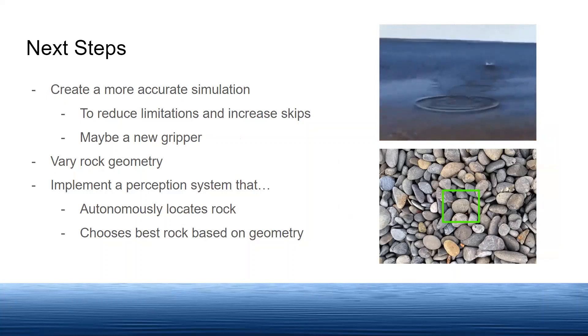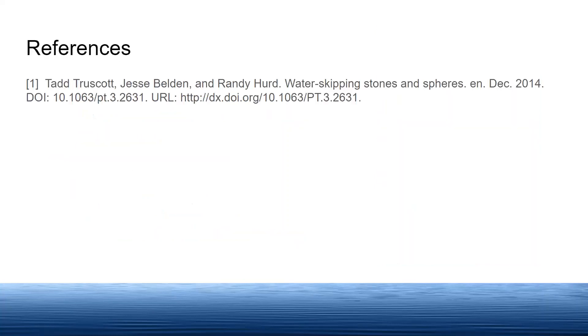We can use data from a test like this to inform a perception system that looks at a bed of rocks and can identify which is best for skipping based on geometric parameters. Then using the same perception system, we can locate and pick up this rock in order to have a fully autonomous system. Thank you for your time.